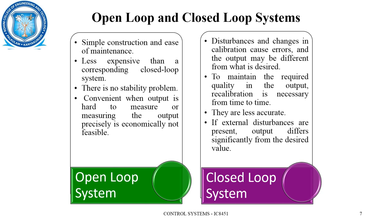Comparing open loop and closed loop systems: closed loop systems may solve many problems, but open loop systems also have certain advantages. Open loop systems are simple in construction and ease of maintenance. Closed loop systems have many components, so disturbances and calibration changes may cause errors. Open loop systems are less expensive due to fewer components, and there is no stability problem since whatever input is provided to the process, there will be an output that will not change unless the input changes.